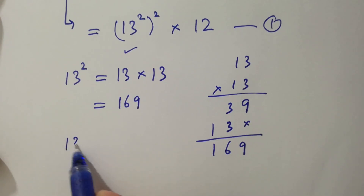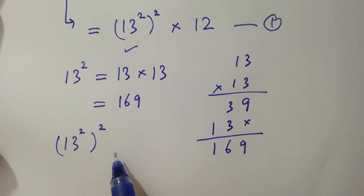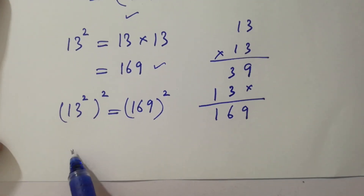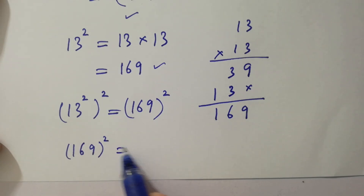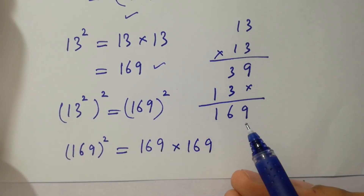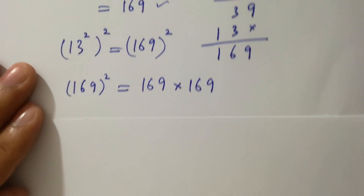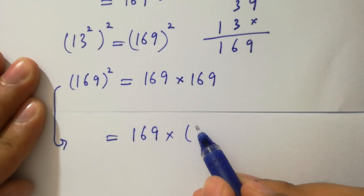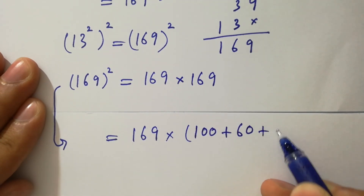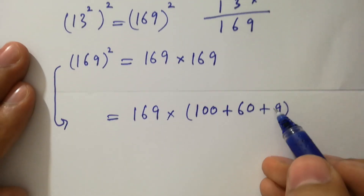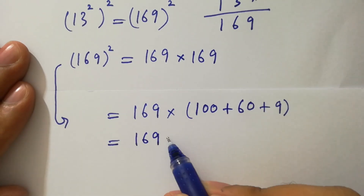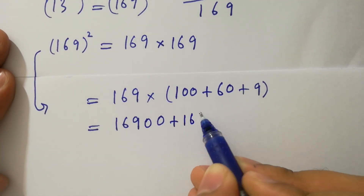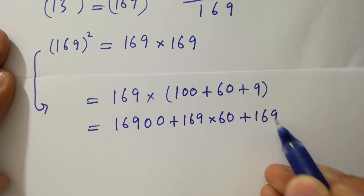Then 13 squared to the whole power 2 will be equal to 169 to the power 2. And 169 to the power 2 is 169 times 169. It can be written as 169 times (100 plus 60 plus 9), giving us 169 times 100, plus 169 times 60, plus 169 times 9.